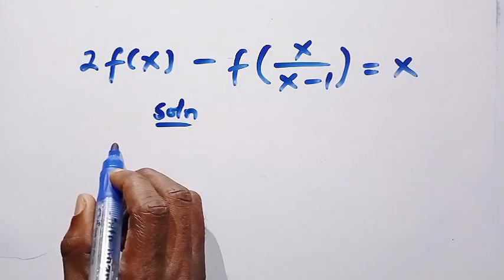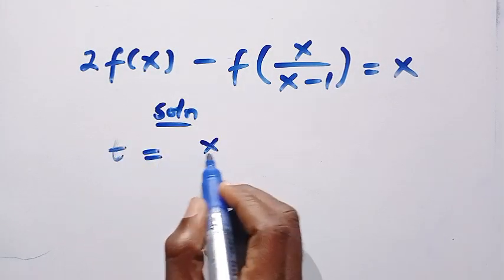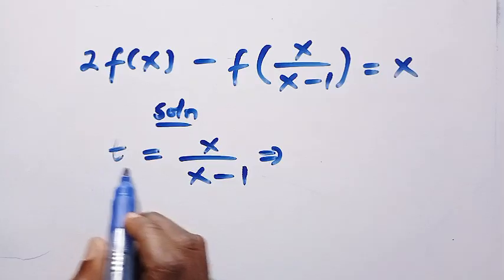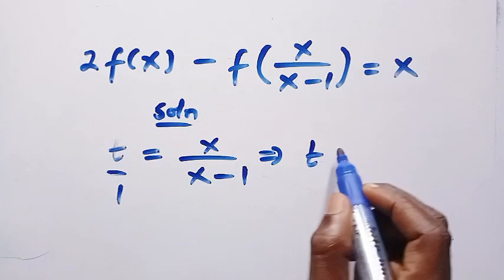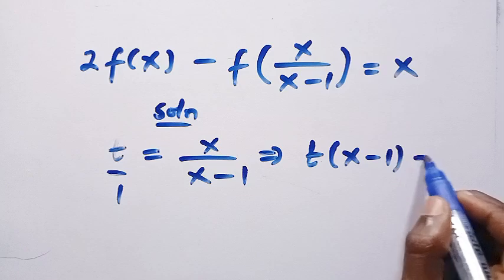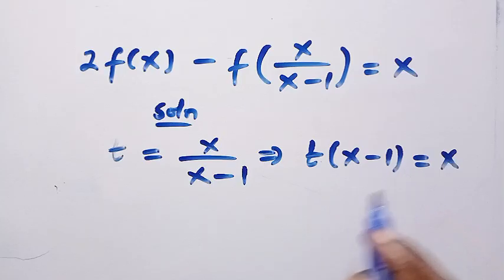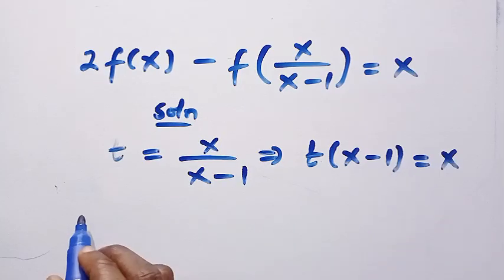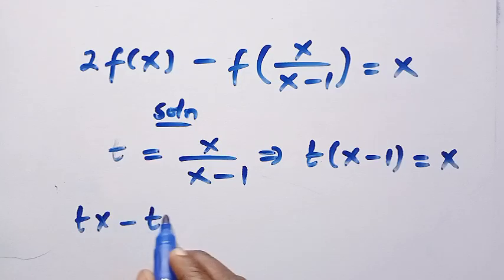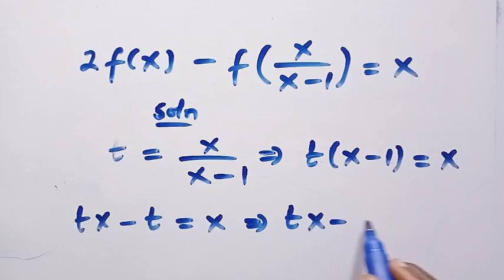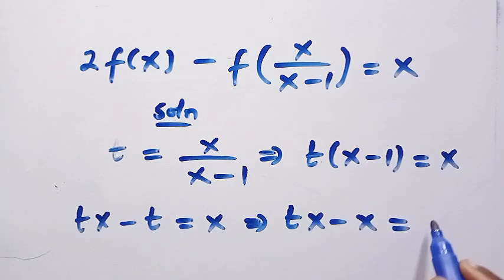If I let t equals x divided by x minus 1, then cross-multiplying gives t times bracket of x minus 1 equals x. Opening the bracket, we have tx minus t equals x. Collecting like terms to make x the subject, we get tx minus x equals t.